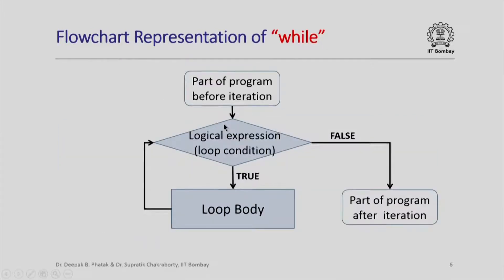As a flowchart, this can be represented as follows. We have the part of the program before iteration and the part after iteration, and then we check the loop condition. If it is true, we go through the loop body and come back to check the loop condition again. At any time the loop condition becomes false, we exit from the loop and execute the part of the program after iteration. Here is a simple animation of how control might flow through a while loop, flowing around the loop a few times and then coming out.